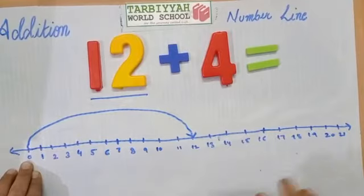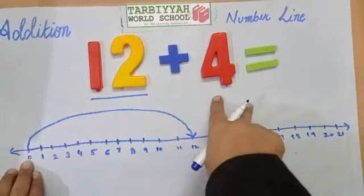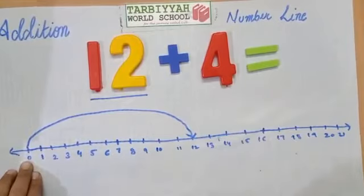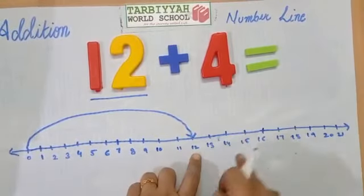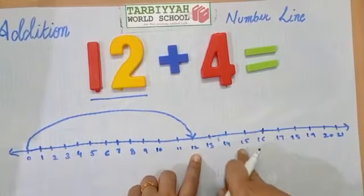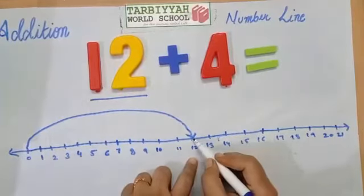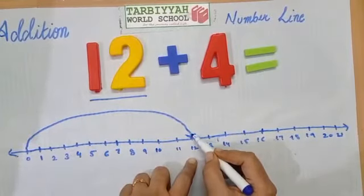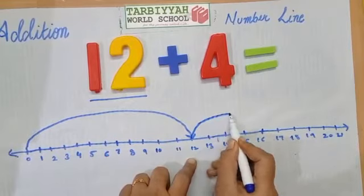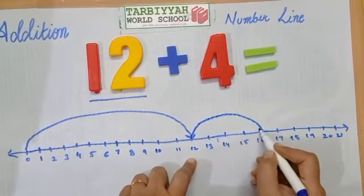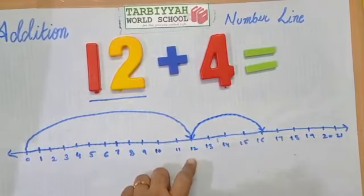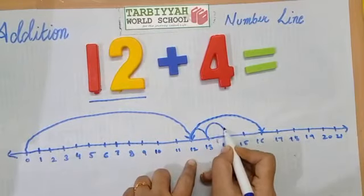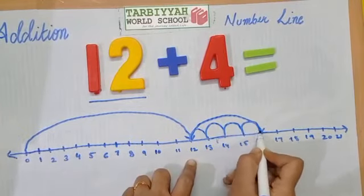Now, how many numbers do we have to add? 4. We have to add 4 more numbers. We have to start from 12 and move forward: 1, 2, 3, 4.